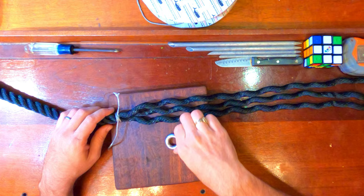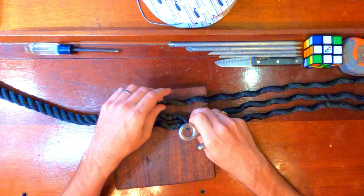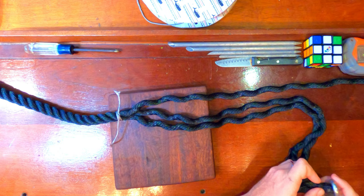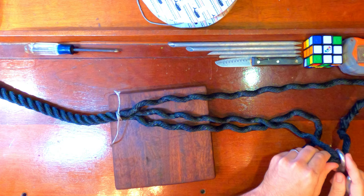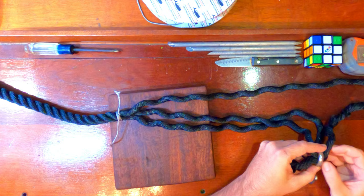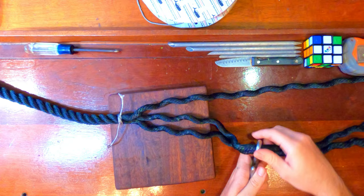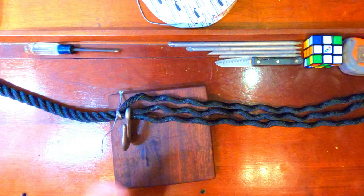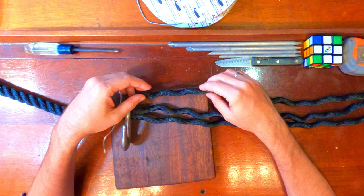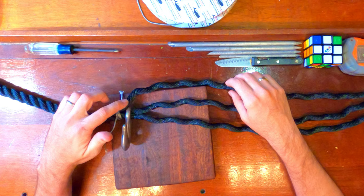I'm just going to slide these all the way down until we get to the constrictor knot. Now we're going to name these lines: this is going to be the first, the second, and the third. The first is the one that is not going through the chain hook. The second goes through the chain hook and the third goes through the chain hook.